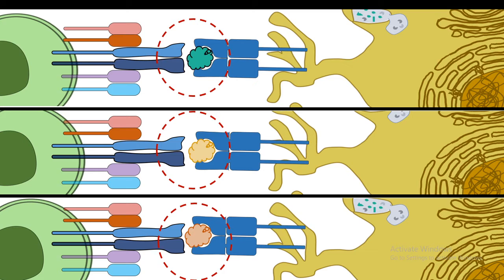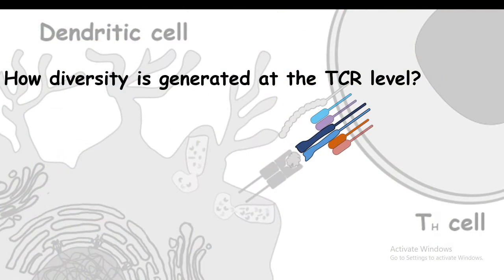All these different scenarios show how difficult it is for the T cell receptor to recognize these pathogen-derived antigens, because in each case these antigens could be different. That is why the T cell receptor needs diversity, needs to generate diversity.